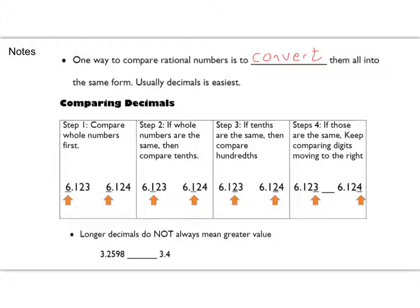If you're comparing 6.123 and 6.124, you're going to work your way down the line to find comparable digits. They both have sixes, so that doesn't help us. We keep working to the right — they both have ones, both have twos. Then we come to the third decimal digit, the fourth digit overall, and we have a 3 and a 4. That tells us that 6.124 is the greater number, so we open up to the big number.